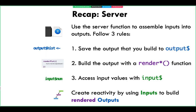So let's recap: you use the server function to assemble your input values into outputs following three rules. Number one: save the output you want to build in the output list — the output will then be accessible by the UI object. Number two: build the output with a render function — the render function assembles the output into HTML and handles tracking dependencies for reactivity. And number three: access your input values from the input$ list and use input values inside of the render function. If you follow these three rules, Shiny will handle reactivity automatically.